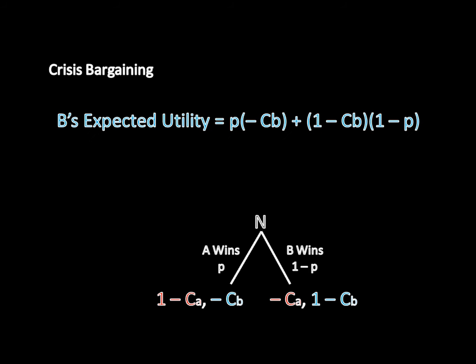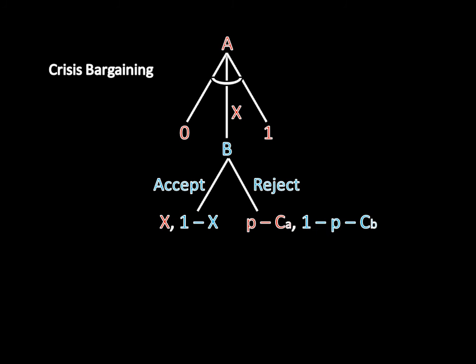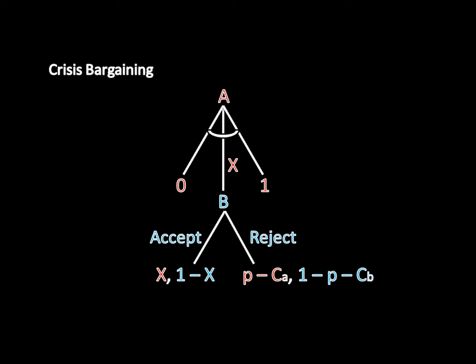Now we need to repeat this process for B, and that simplifies to 1 minus P minus CB. Now that we've found each of the player's expected utilities, we can change the game from this to this. And I think you'll agree that this version is easier to solve.